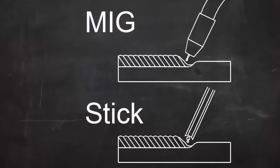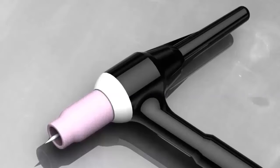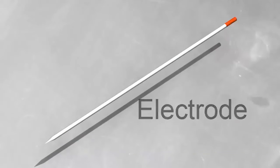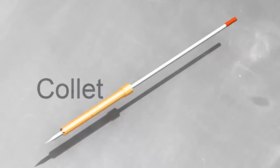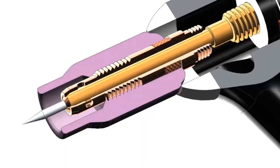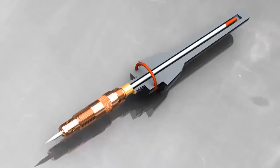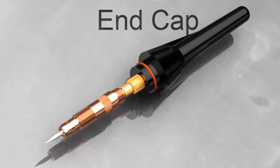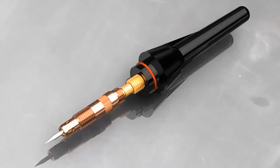In a lot of other welding processes, the electrode melts and becomes filler metal — those are consumable electrode processes. The tungsten electrode is held in a TIG torch. The electrode slips into a collet, and the collet tightens up against the collet body. You can adjust the length that the electrode sticks out of the holder by loosening the end cap. When you tighten the end cap, the collet clamps down on the electrode.